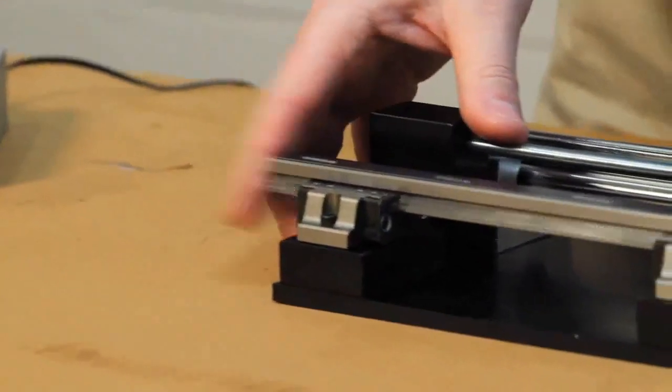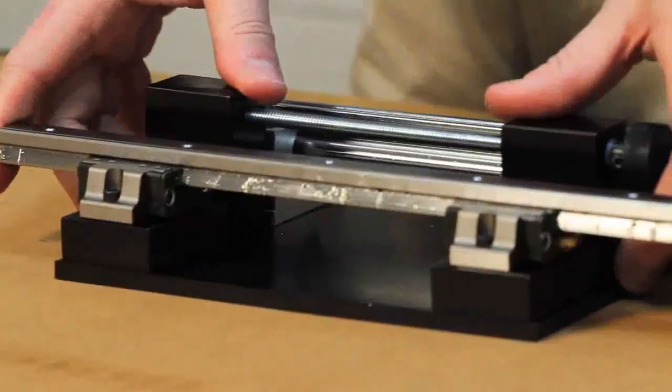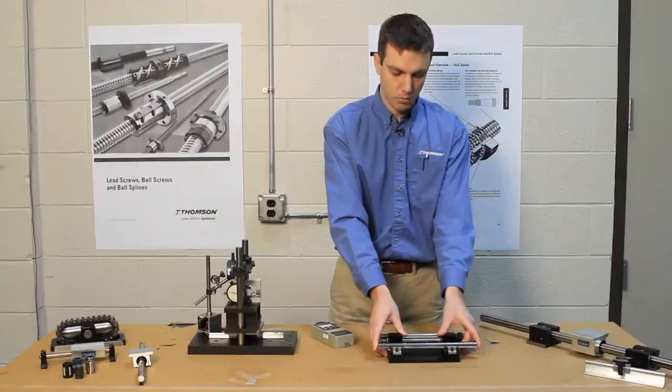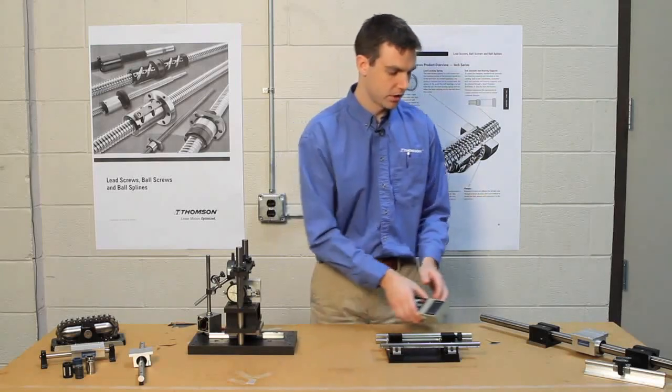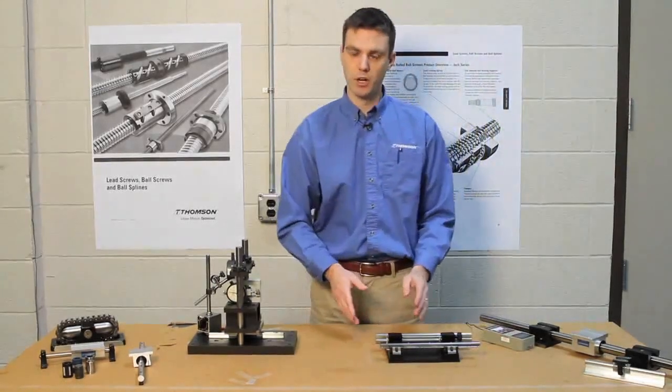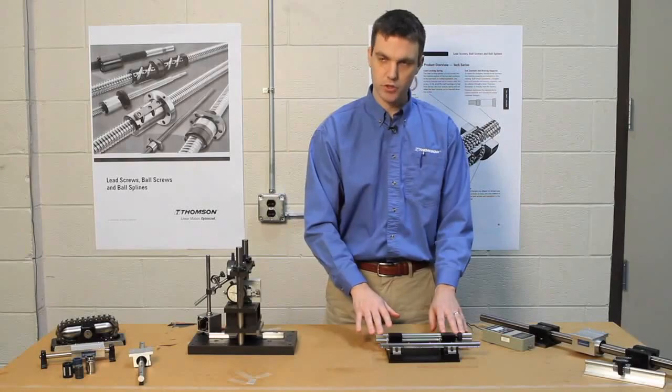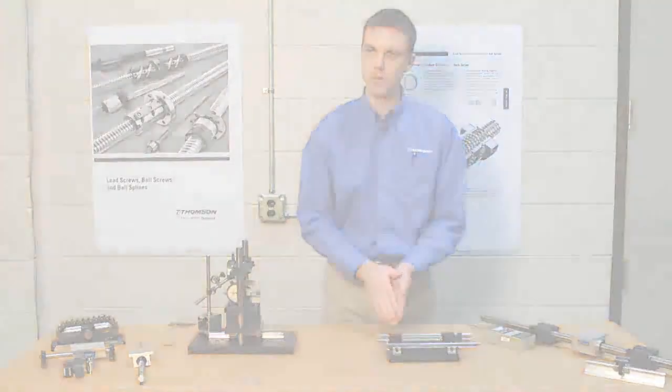If there was even more deformation in this base, you couldn't move this at all. It would completely seize. So what this illustrates is that depending on what your installation requirements are and what your base is like, it's really going to help drive you towards using a square rail versus a round rail.